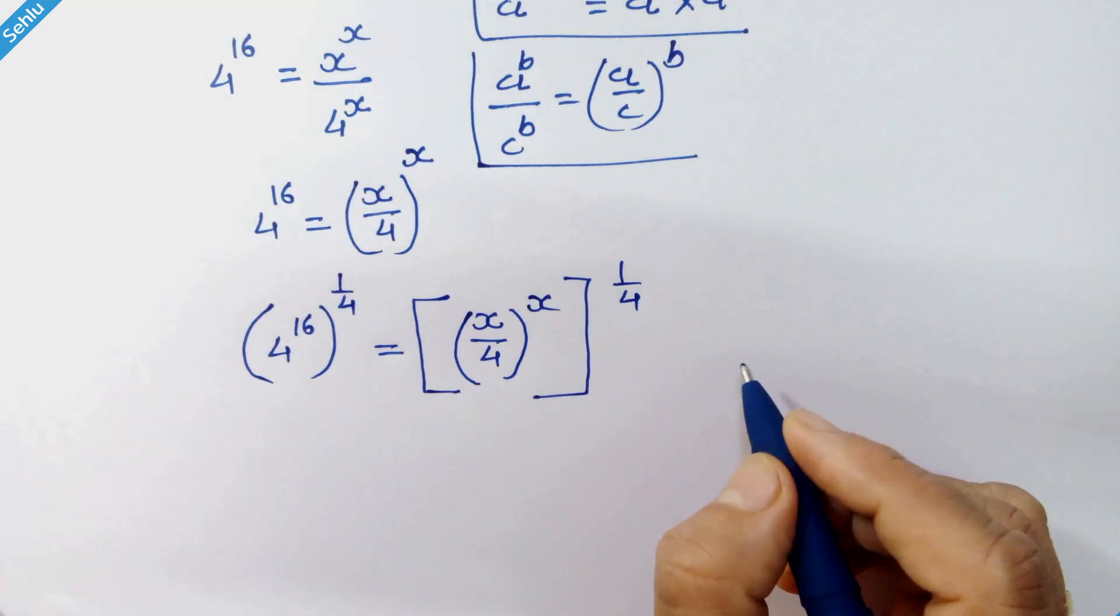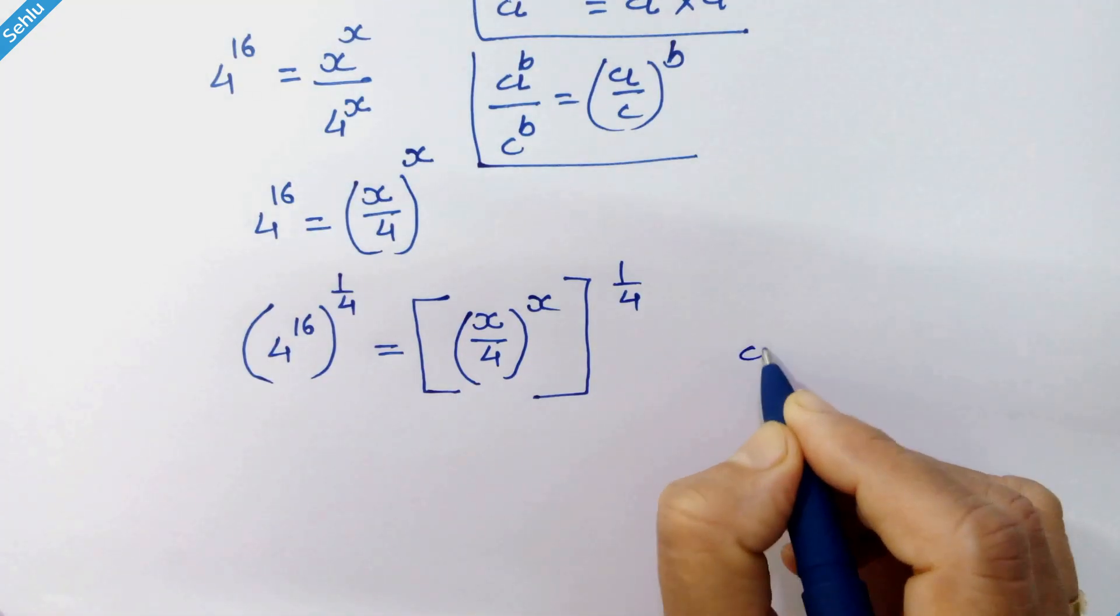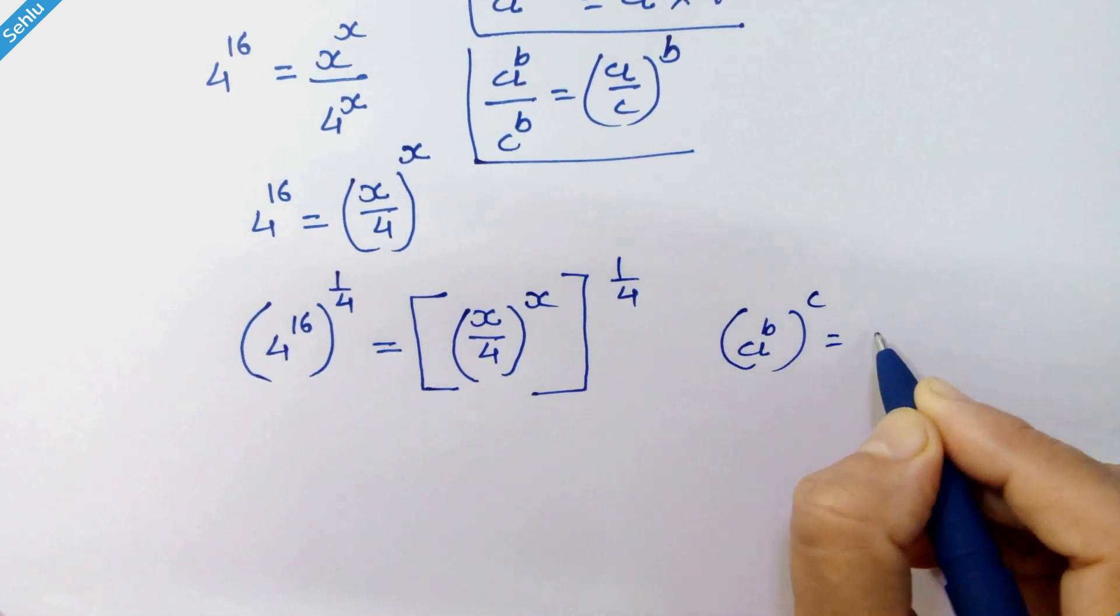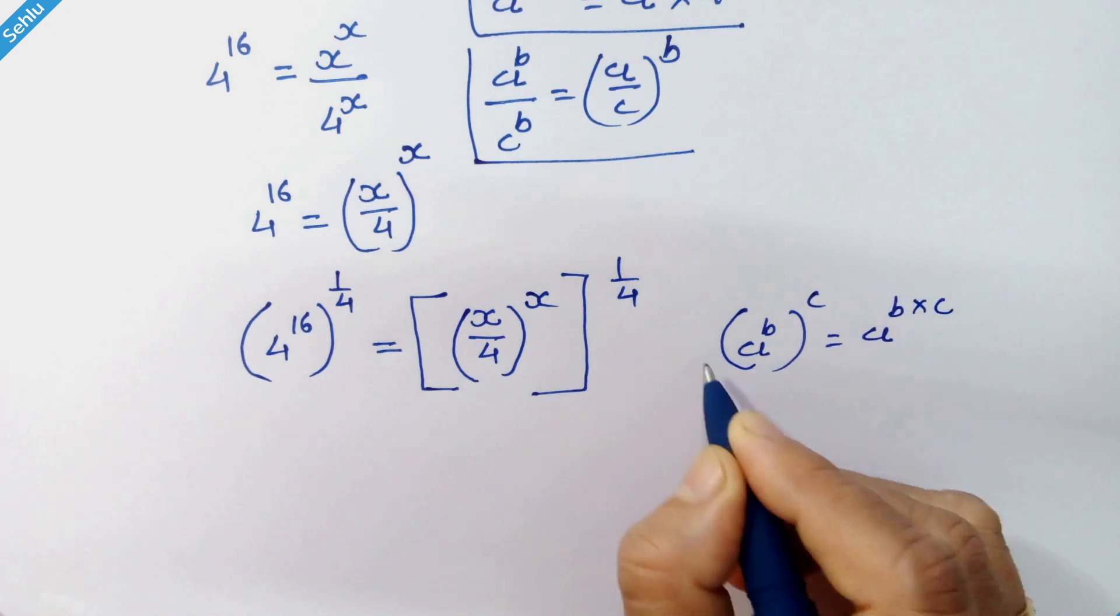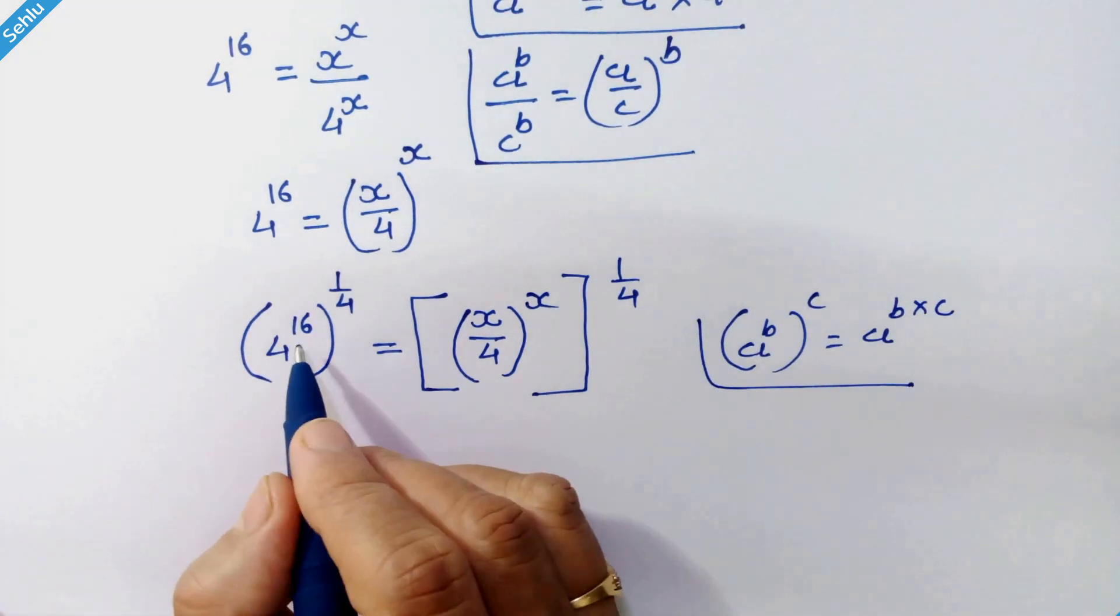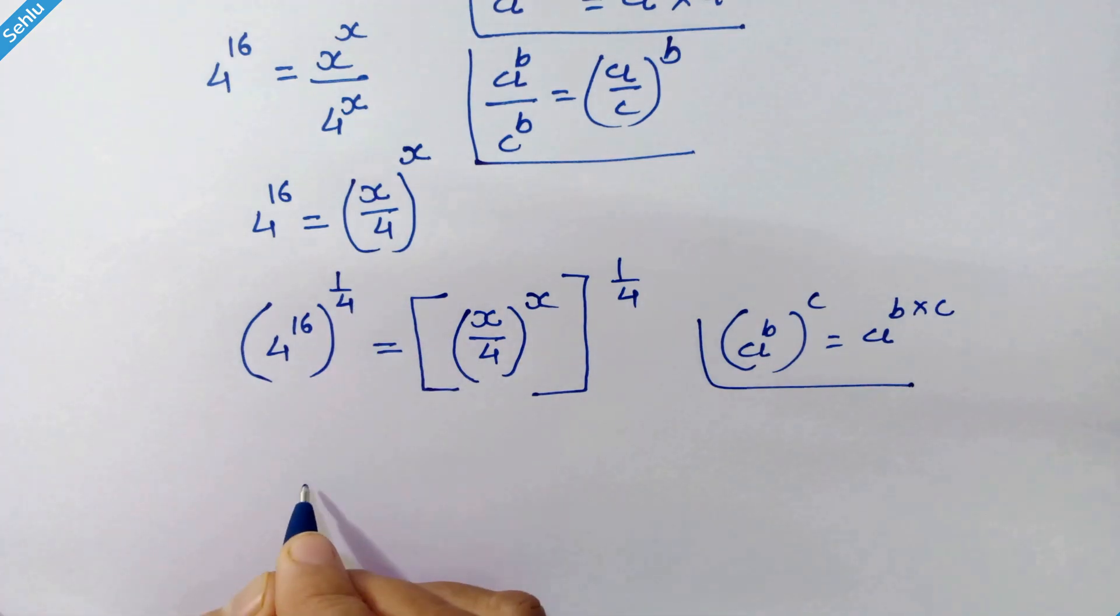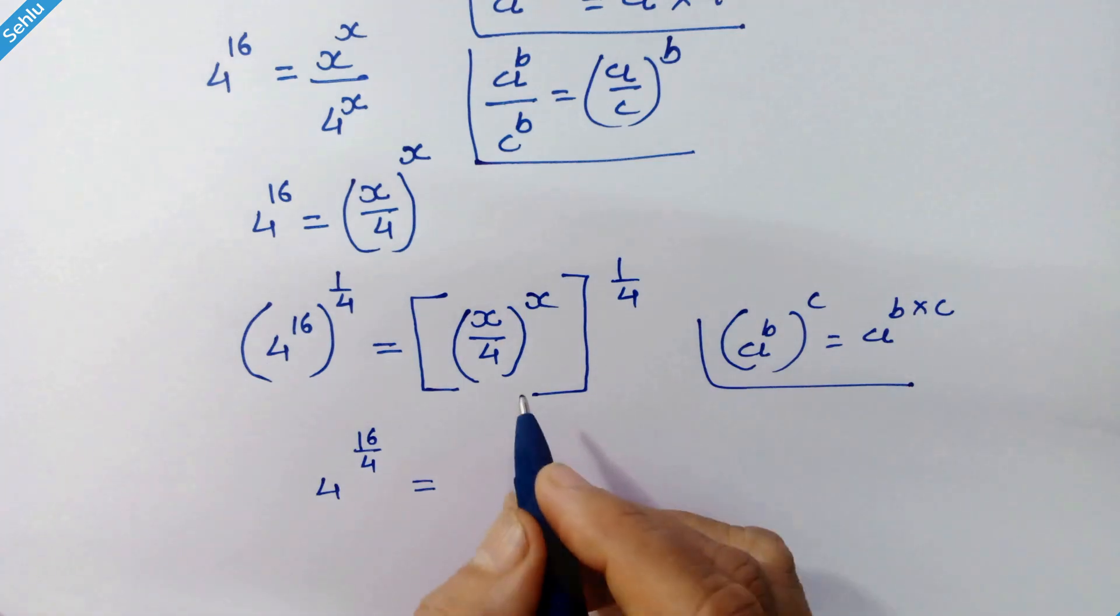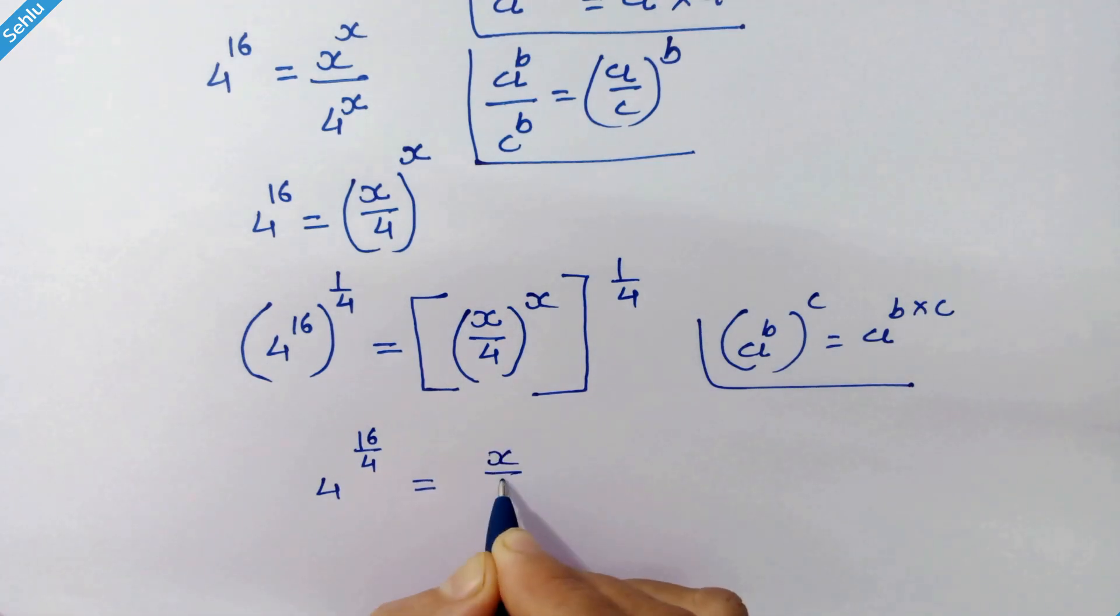Now let's recall a rule: if a raised to b, whole raised to c, it can be written as a raised to b times c. So these exponents will multiply. We have 4 raised to 16 over 4, and the same thing can be done here, giving us x over 4 whole raised to x over 4.